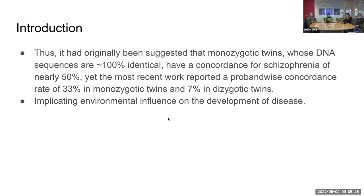Schizophrenia as a whole was estimated to have 50% inheritance between identical twins, but recent papers have shown it's actually 33% in monozygotic twins and 7% in dizygotic twins. This is profound because most of the work that's made progress in schizophrenia has been to find genetic markers that explain variation in this data, and this implies that there are large environmental variables and complex molecular biology impacting the development of this disease as well.